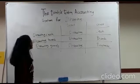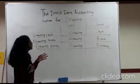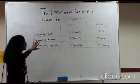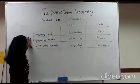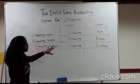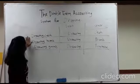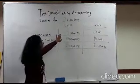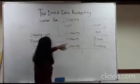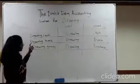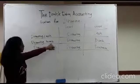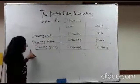Now I'm going to explain about drawing. Drawing by cash: drawing will be at debit side, cash will be at credit side. Drawing by bank: drawing will be at debit side, and bank will be at credit side.